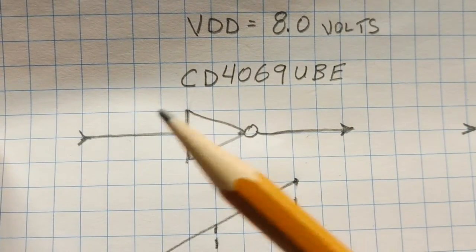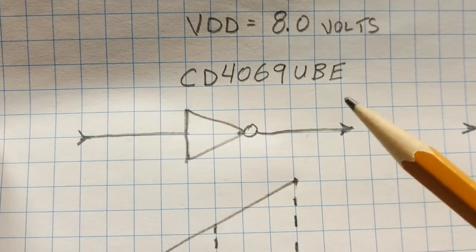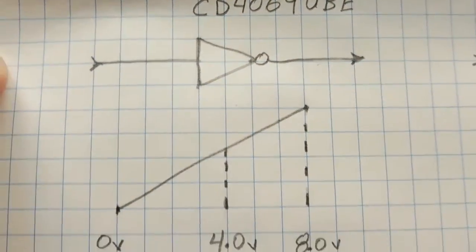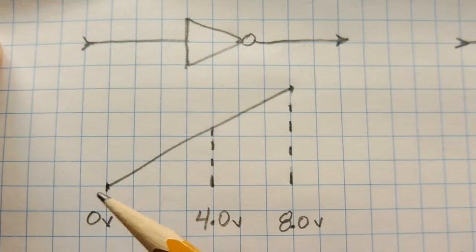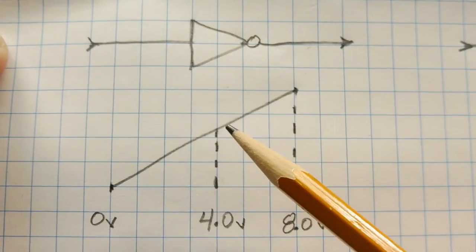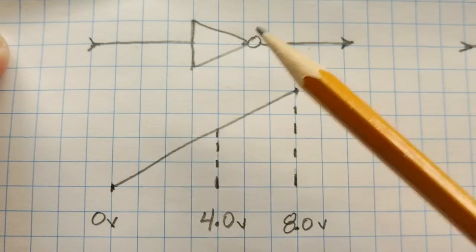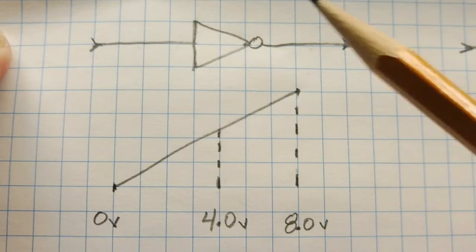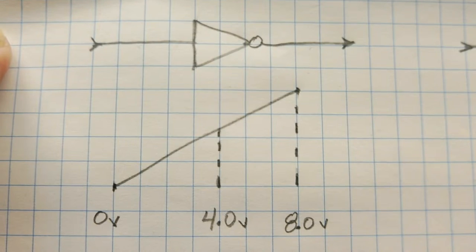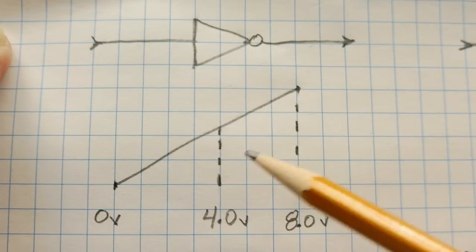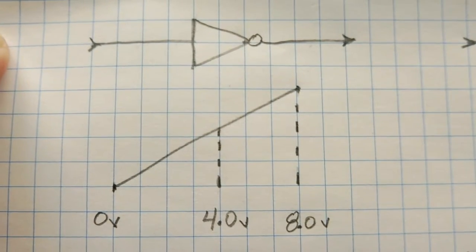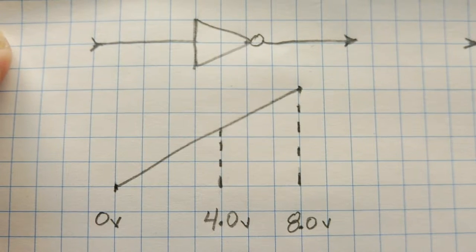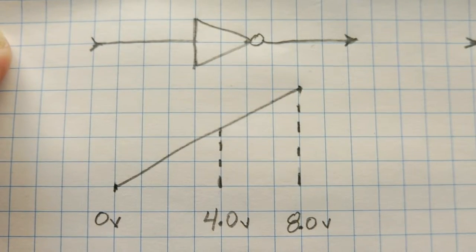Now if we start out with 0 on the input and 1 on the output, and we vary the voltage slowly from 0 volts towards 8 volts, when we hit 4 volts, the output will switch. So we'll switch from a 1 to a 0. So switching happens at VDD divided by 2, so half the supply voltage. So that's why the 4000 CMOS series has good noise immunity.